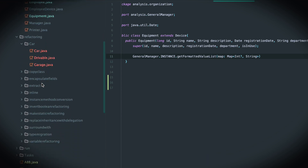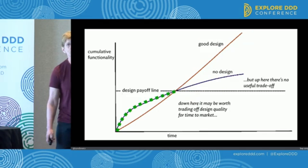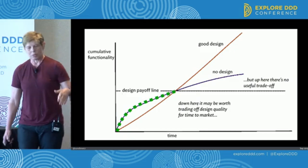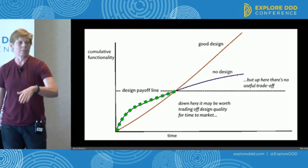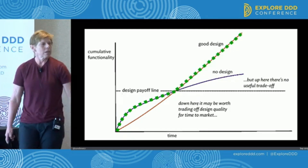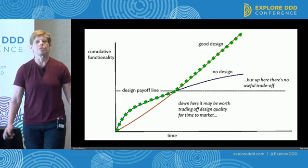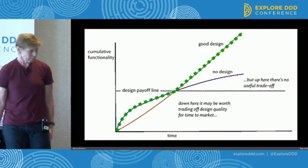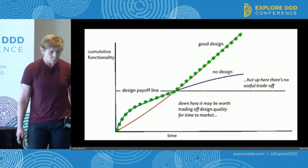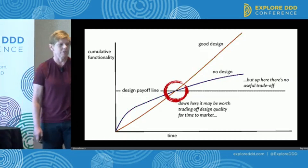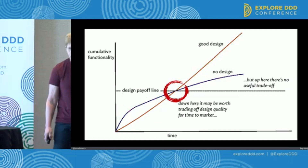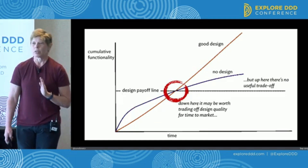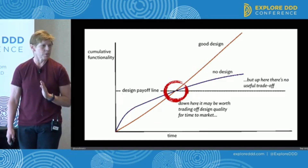So what you really want, if you want to be most efficient about writing code, is to be on the no-design line up until this inflection point, and then start doing design as soon as you know enough about your application. This inflection point is where you should change how you write code and how you do business.